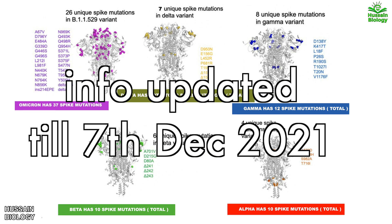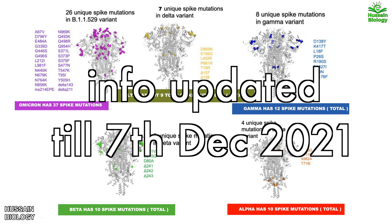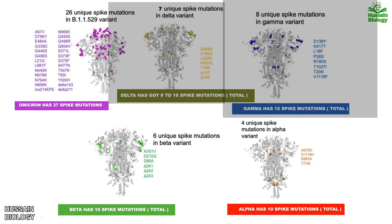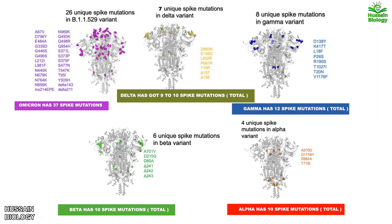From the above data it can be said that more mutations do not always mean a more dangerous variant. For example, the Gamma variant has more spike mutations than the Delta variant, yet Delta wreaked havoc. So when we talk about Omicron, it has an enormous number of spike mutations unlike anything seen before, but it would be premature to say these mutations make it more efficient than Delta — or conversely, more fatal. Nothing can be definitively said based on the available data yet.